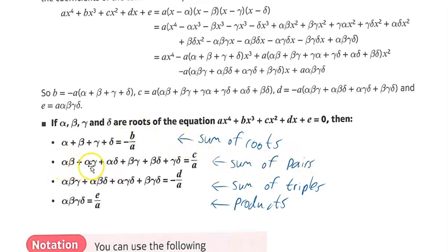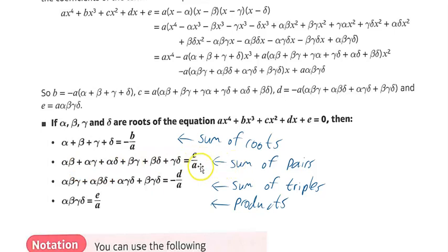The sum of all possible pair combinations — alpha beta, alpha gamma, alpha delta, beta gamma, beta delta, gamma delta — is equal to c over a. The sum of all possible triple combinations is going to be minus d over a.